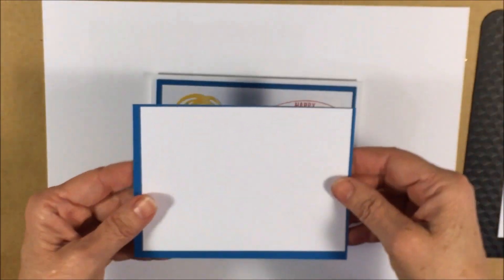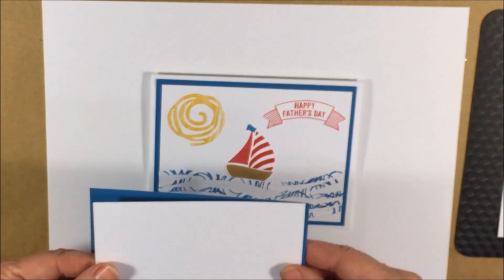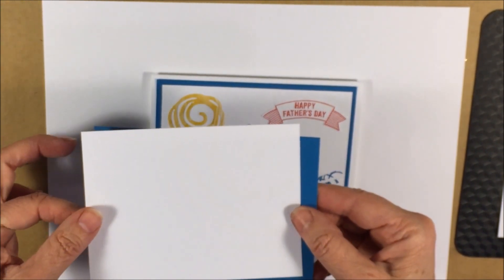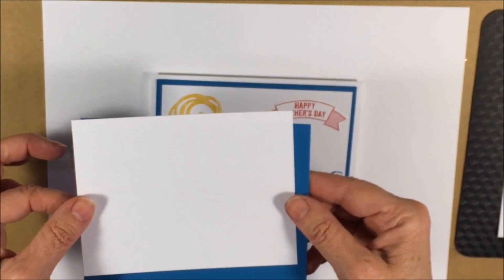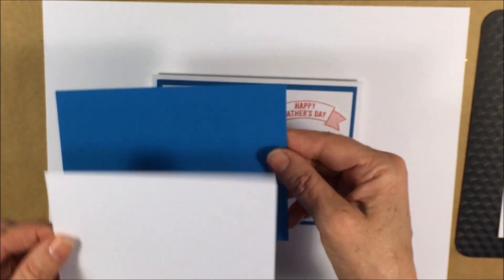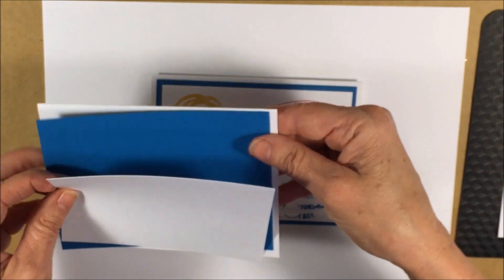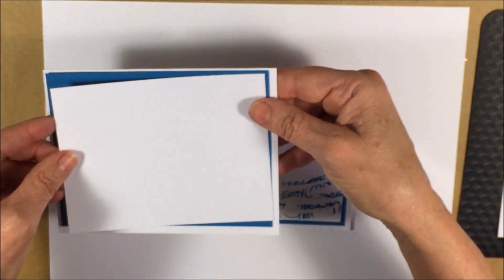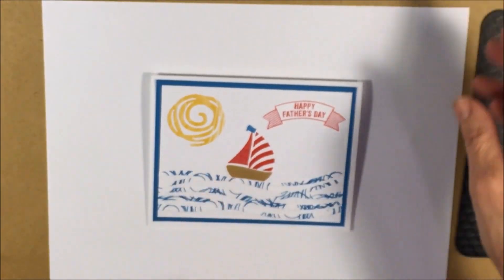First thing I did was I cut out the base piece of paper out of Whisper White which is three and three quarters by five inches, and the matte piece is four inches by five and a quarter. When we get all done it'll go on your standard card piece.